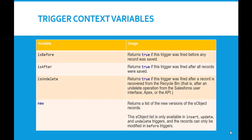The next context variable is isBefore, which returns true only if the trigger was fired before any record was saved. Similarly, isAfter returns true if the trigger was fired after all the records were saved.